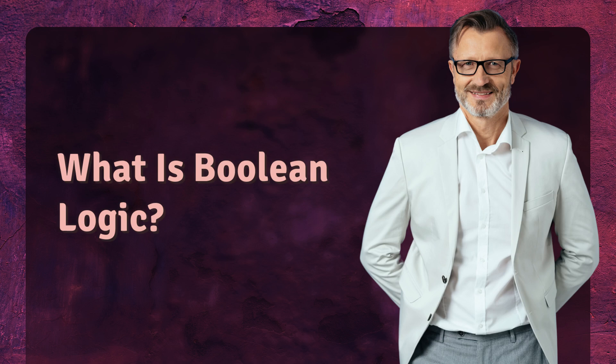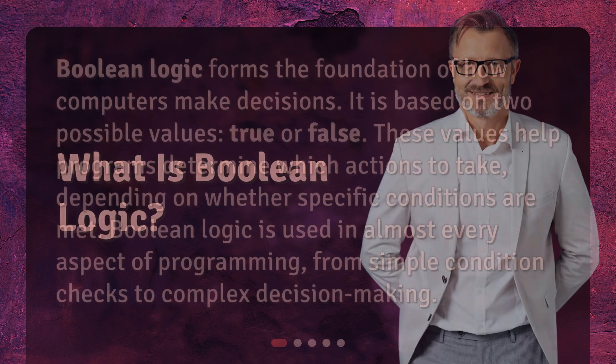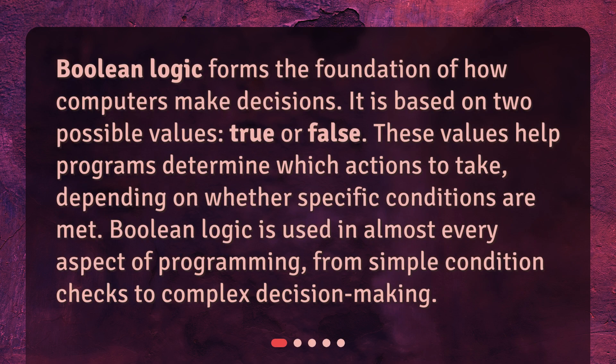What is Boolean logic? Boolean logic forms the foundation of how computers make decisions. It is based on two possible values: true or false. These values help programs determine which actions to take, depending on whether specific conditions are met. Boolean logic is used in almost every aspect of programming, from simple condition checks to complex decision-making.